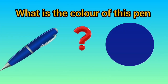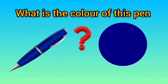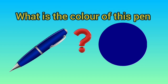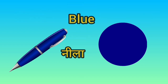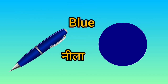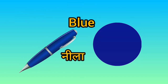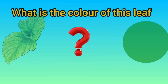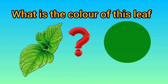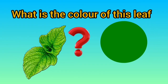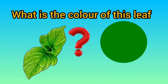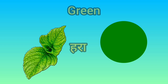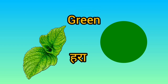What is the color of this man? Blue means Neela. What is the color of this leaf? Green means Hara.